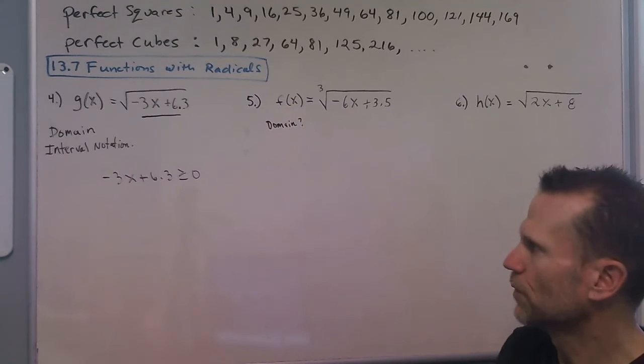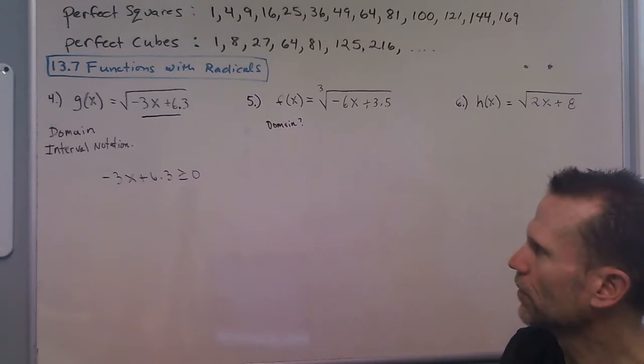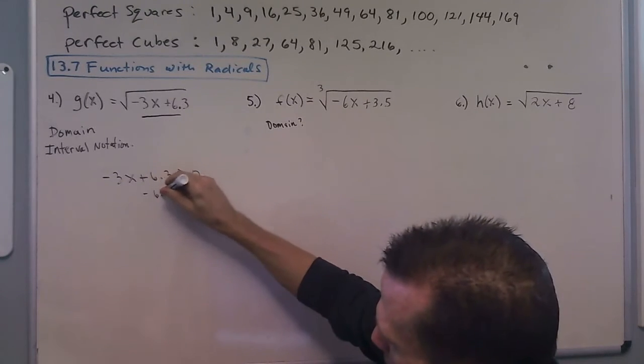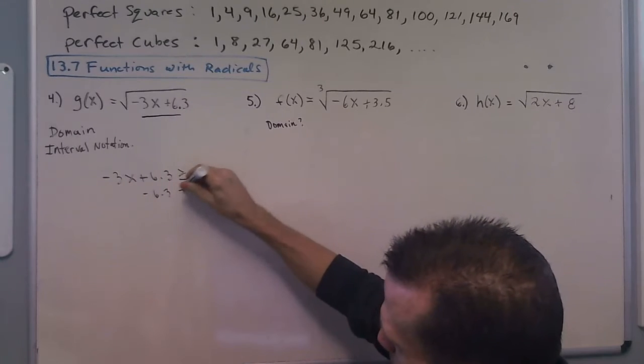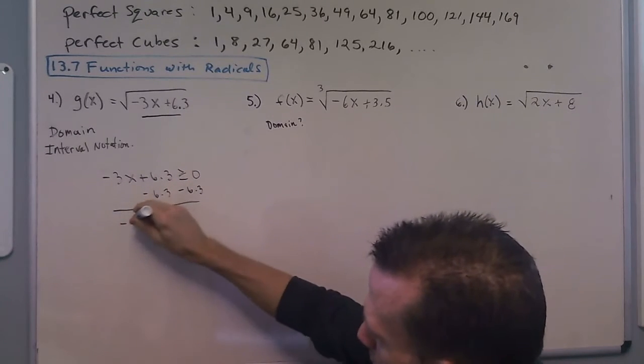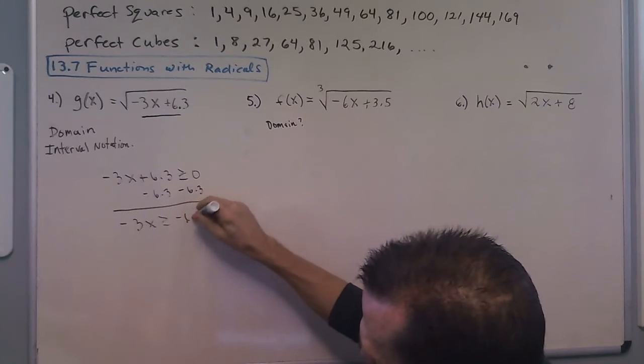That's going to tell you what input values are safe or will work for this function. So if we subtract 6.3, we get negative 3x is greater than or equal to negative 6.3.